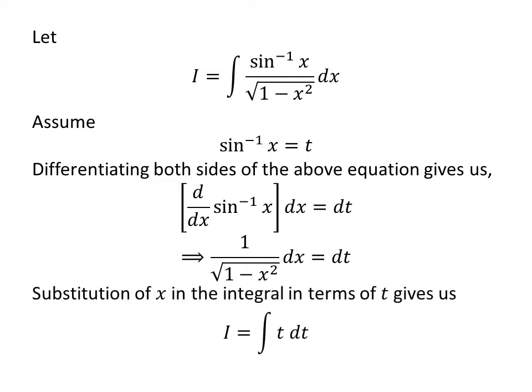Let us substitute arc sine of x by t and 1 upon square root of 1 minus square of x times differential of x by differential of t, so I is equal to integral of t with respect to t.